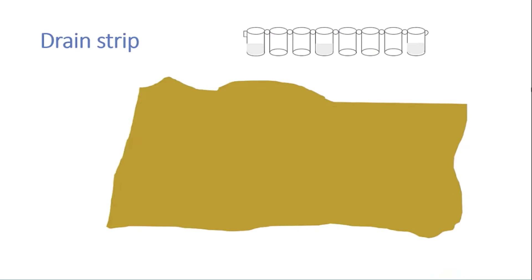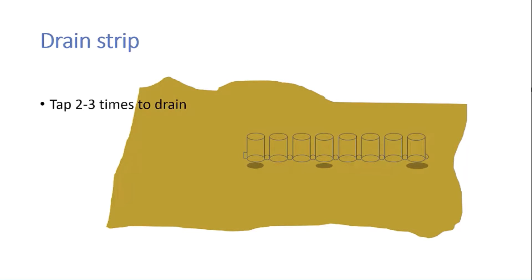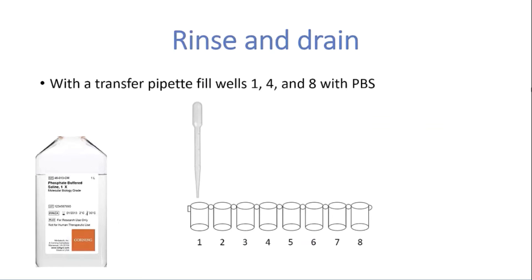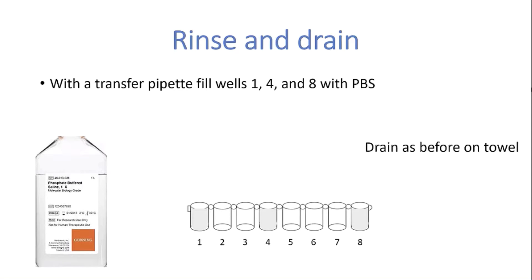After 5 minutes, the liquid in the strip is drained by flipping the strip over on a paper towel on the bench and tapping it 2 to 3 times. The wells are then washed with phosphate buffered saline: using a transfer pipette, fill wells number 1, 4, and 8 with PBS, then drain as before on a paper towel. Repeat the rinse and drain again.